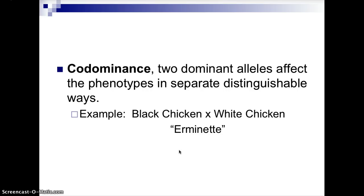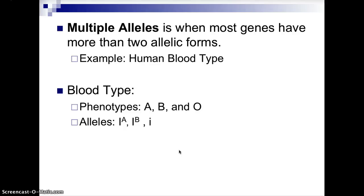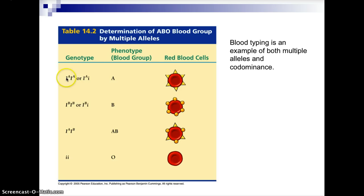Multiple alleles is when most genes have more than two allelic forms. The best example here is blood typing, which is also a case of codominance. When you have blood type I-A, I-B genotypically, your phenotype is AB blood. The alleles for blood type are capital I-A, capital I-B, and lowercase i. For type A blood, the genotype could be I-A, I-A or I-A, lowercase i — both give you phenotype A blood.